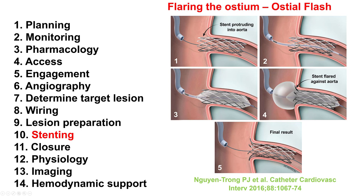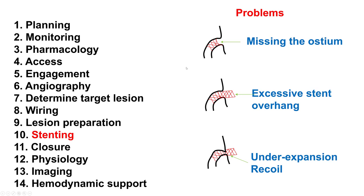What can go wrong with stenting? One thing is to miss the ostium, having the stent placed too deep into the vessel. The second is having the stent protrude too much back into the aorta. The third is to have the stent underexpanded, or the stent expands but then there is recoil, because these lesions can be very hard to dilate sometimes.